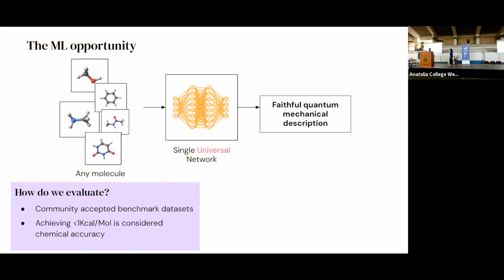In terms of how we evaluate, well, luckily for us, there are a number of community accepted benchmark data sets where it's considered, if you do well on those, your method is considered a good one, and achieving an error less than one kilocalorie per mole is considered to be chemically accurate. And so in there lies our third and final requirement for problem selection, which is making sure there's a clear objective function and success metric for us to measure our progress.